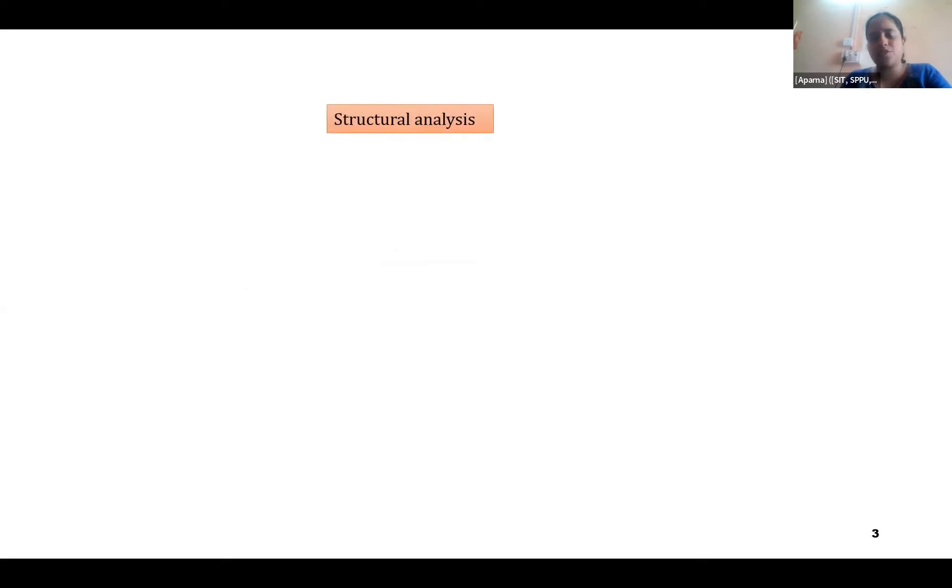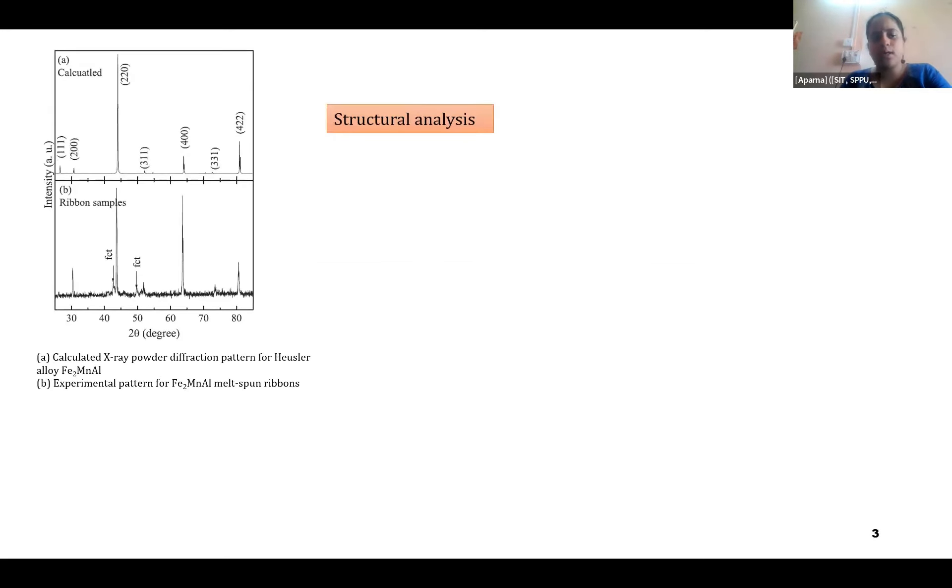So here I would like to compare the structural analysis with already reported melt-spun ribbons of Fe2MnAl with what I have been able to obtain as homogeneous ingots. In the literature, it has been reported that these melt-spun ribbons exist as a B2 phase.